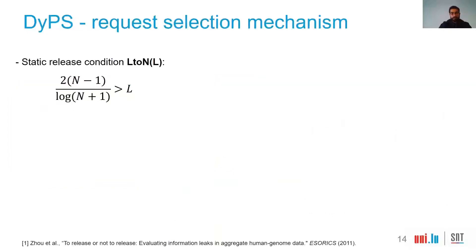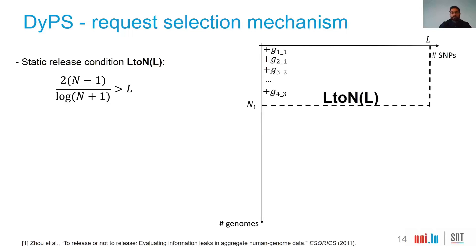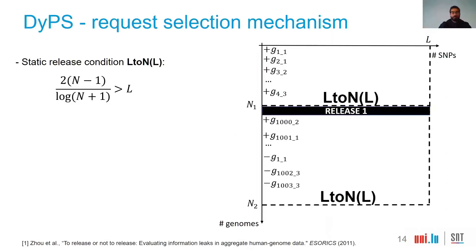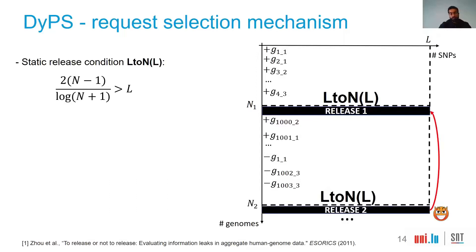Now let's see how our solution works. There is a static release condition in the state of the art defined by an equation. We know the number of SNPs in a study, represented by L, and using this equation we can find how many genomes N we need to protect a release. On the right side, we have an example where we have gathered N1 genomes that satisfy the conditions of this inequality. However, the state of the art does not assume that adversaries can combine releases, so by observing multiple releases, adversaries can circumvent these bounds.